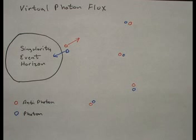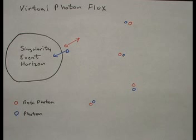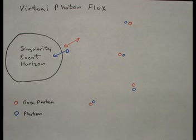We see here a singularity. The black line around it is the event horizon. Very close to the event horizon of a singularity, the conditions are different, so that when a virtual particle pair materializes near the event horizon, they can exist — they can fully come into reality. When they do, instead of annihilating each other practically instantly, the positive matter particle gets pulled across the event horizon, and the antimatter particle is accelerated away from the event horizon due to its nature of being antimatter.